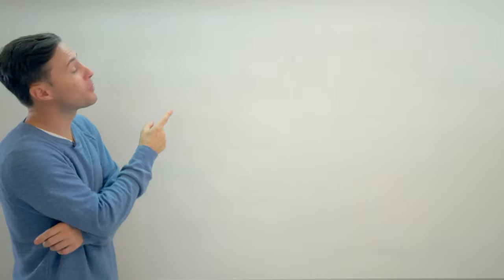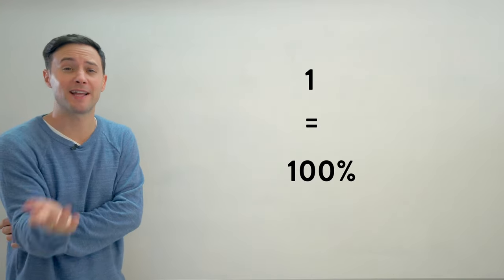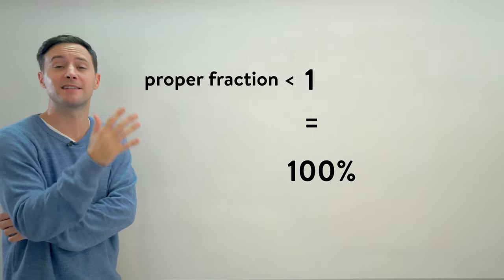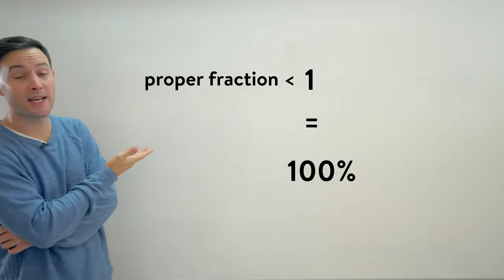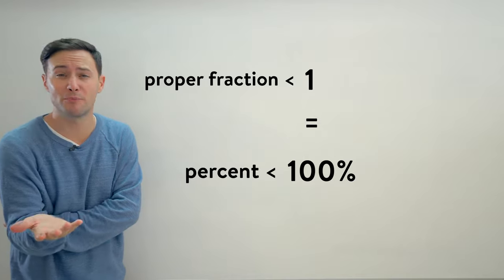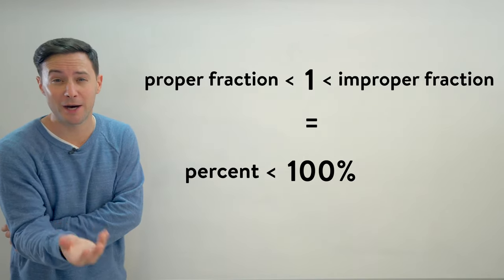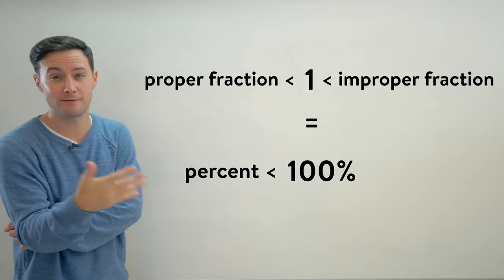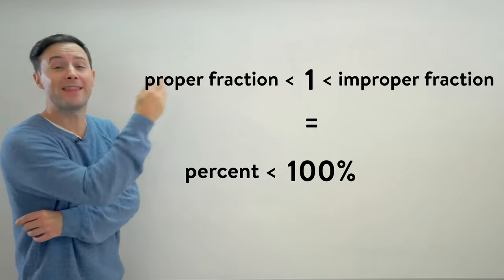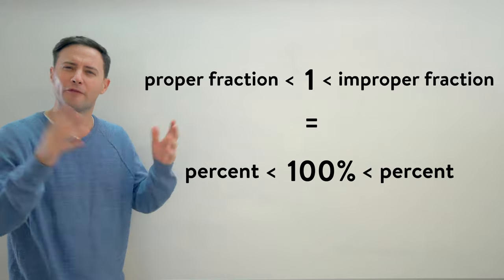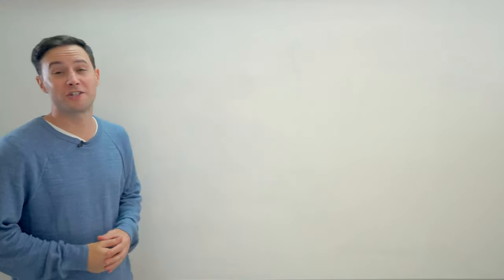In conclusion, the number one is equal to a hundred percent. Like we said before, if you have a proper fraction that's less than one, you're going to get a percent that's less than a hundred percent. If you have an improper fraction or a mixed number that's greater than one, which it has to be, then that means you should be getting a percent that's greater than a hundred percent. Hopefully that makes sense. And here's a few more to try on your own.